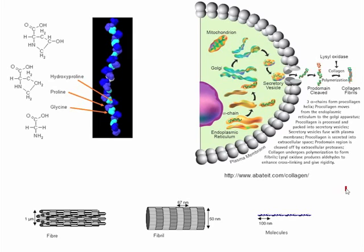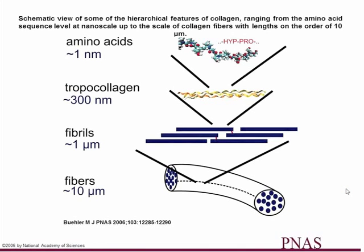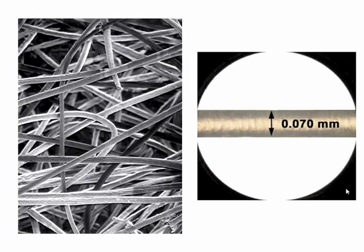To give you some idea about the scale of events: here we've got the chain of amino acids, here the triple helix — the tropocollagen — here the fibrils, and here the fibres. This is the electron microscopy view of dermal collagen, and those fibres would be 10 micrometres in diameter. By comparison, a very fine human hair would be 70 micrometres in diameter — so it gives you some idea about the scale of things.